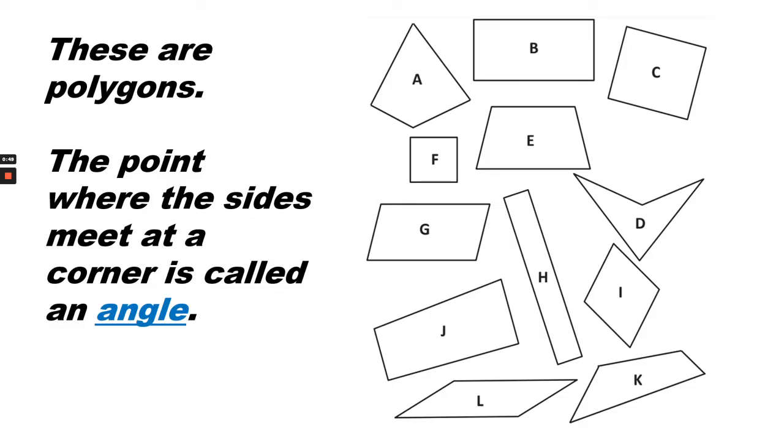These are polygons. The point where the sides meet at a corner is called an angle. This is an angle. This is an angle. This is an angle.